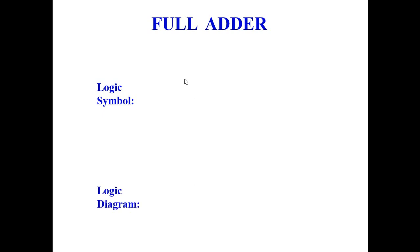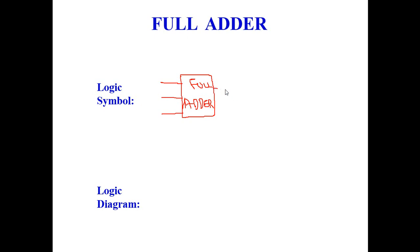The logic symbol of the full adder is a block labeled 'Full Adder' with three inputs A, B, and C, and two outputs: Sum and Carry. The key difference from the half adder is the three inputs instead of two.